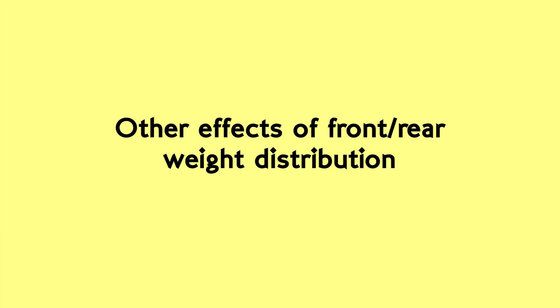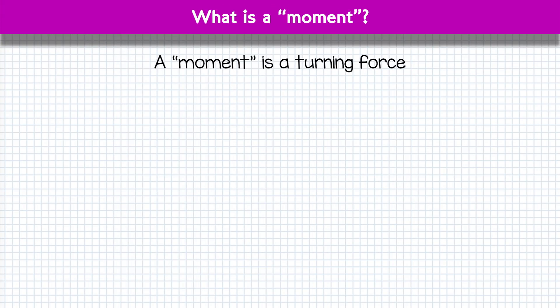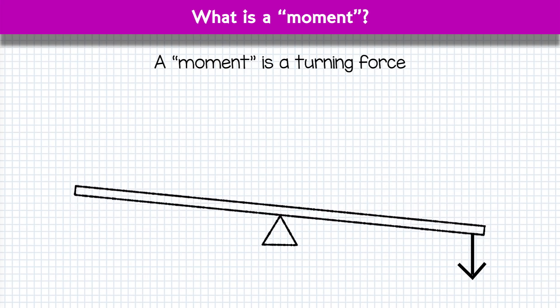And what else happens when we move ballast around between front and rear of the car? We need to have a little understanding of two things: moments and inertia. A moment is a turning force. Specifically when we think about moments we think of a pivot point and applying a force a certain distance from that point.